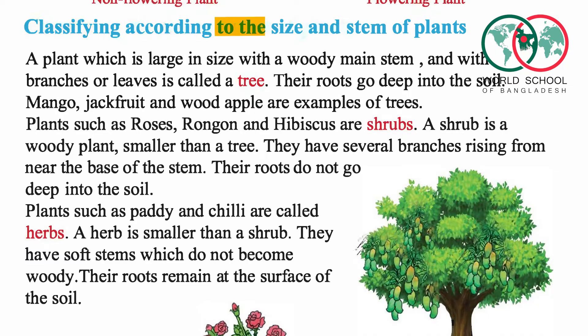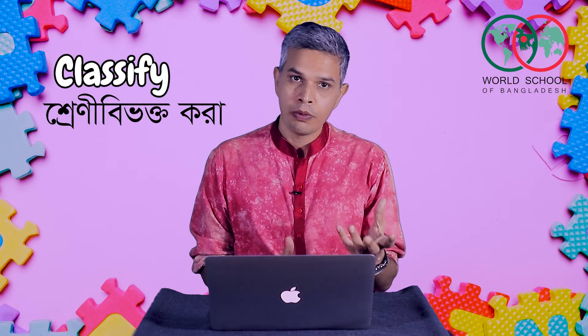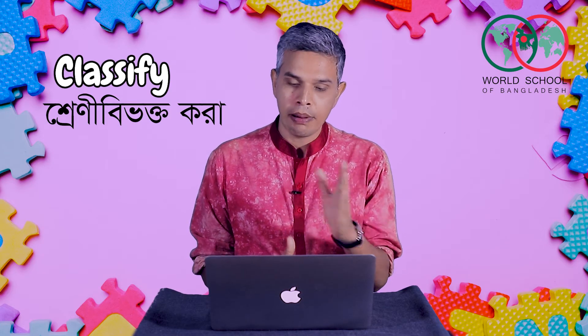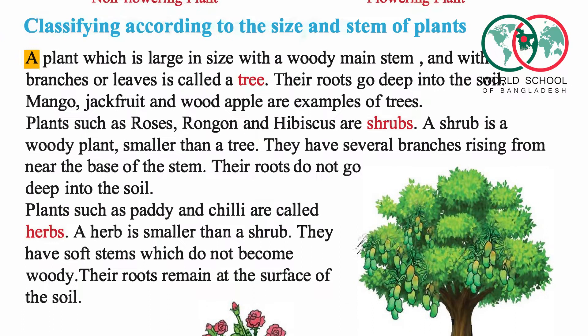Classifying according to the size and stem of plants. A plant which is large in size, with a woody main stem, and with branches or leaves, is called a tree.